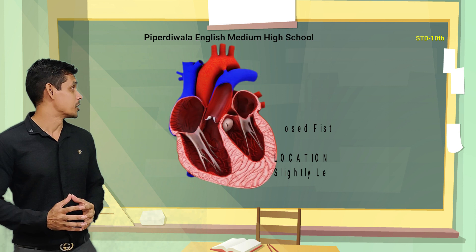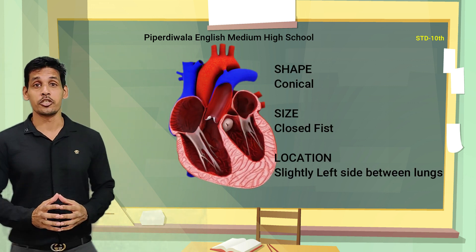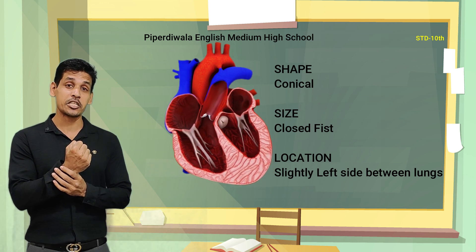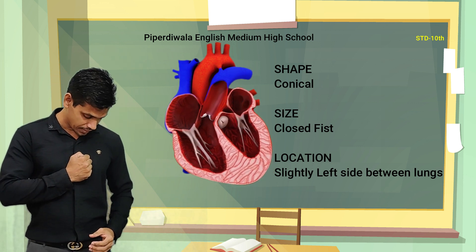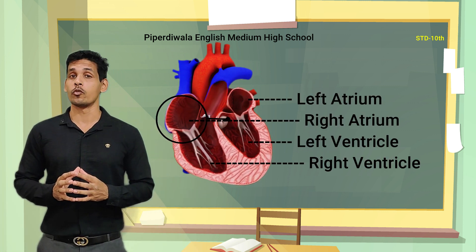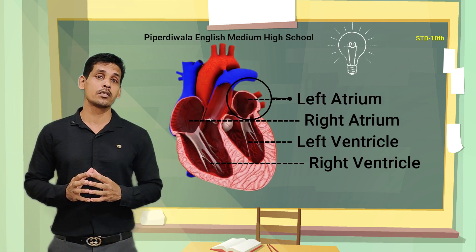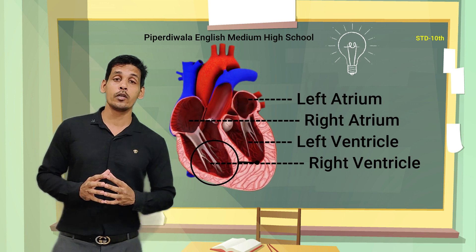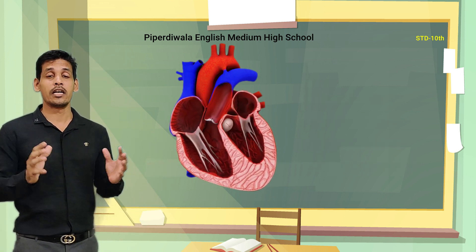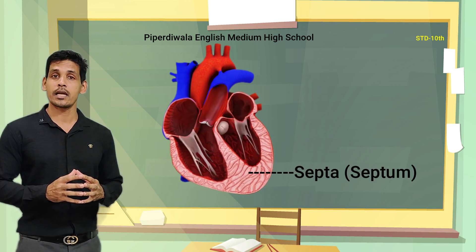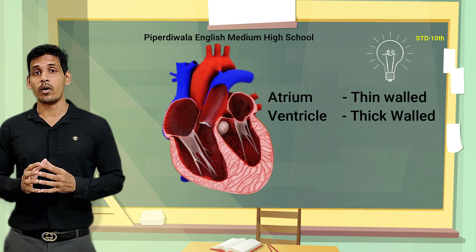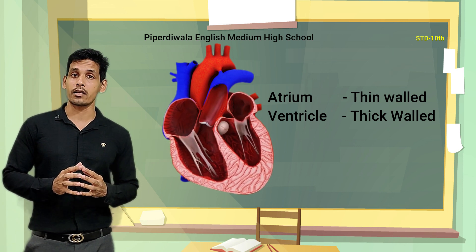The shape of the heart is conical and the size is no bigger than your closed fist. It is situated slightly to the left-hand side in the thoracic cavity. The human heart is four-chambered. The upper two chambers are known as auricles and the lower two chambers are known as ventricles. All four chambers are divided by a partition known as septa. The walls of the atrium are thin while the walls of the ventricles are thick.